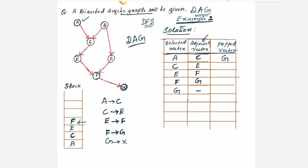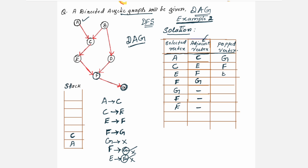Next in the stack is F. For F, you check: are there any neighbors? F had only one neighbor, G, which was already visited. So F has no more neighbors at all and you have to pop it out, placing it in the popped vertex column. Now the stack pointer is pointing to E. Find the neighbors for E — E has only one neighbor, F, which is already visited. So no more neighbors for E; you need to pop out and place E in the popped vertex column.